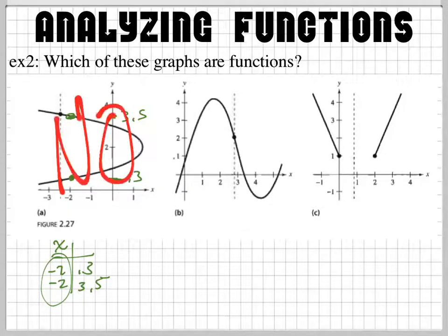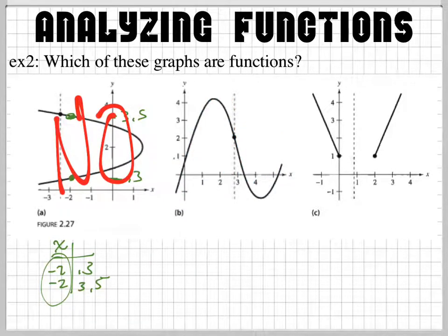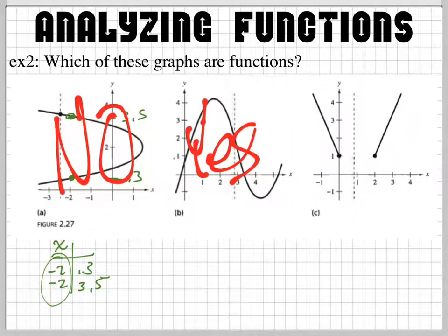Look at this function right here. It has a fancy little squiggly right here. Does every domain number have exactly one? Yes. From what we can see, yes. So is this a function? Yes. Look at this last one. This one's kind of weird. Is this one a function? Yes. Simply put, these numbers right here are just not in the domain. They're not in the domain because there's no answer for them. But every number that does have an answer only has one, right? So is it a function? Yes.